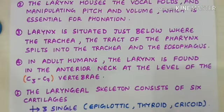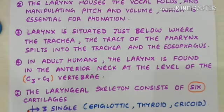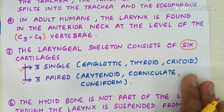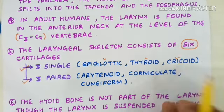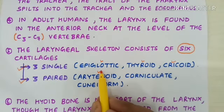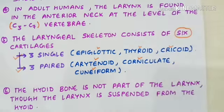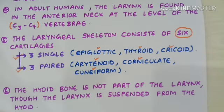The larynx consists of six cartilages. Out of six, three are unpaired and three are paired. The three unpaired cartilages are the epiglottis, thyroid, and cricoid cartilages. The three paired cartilages are the arytenoid, corniculate, and cuneiform cartilages.